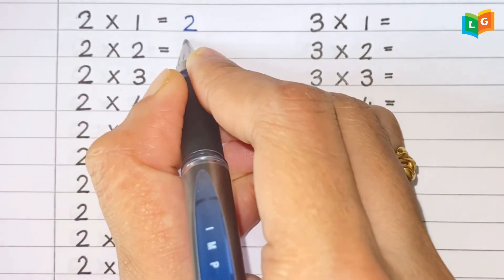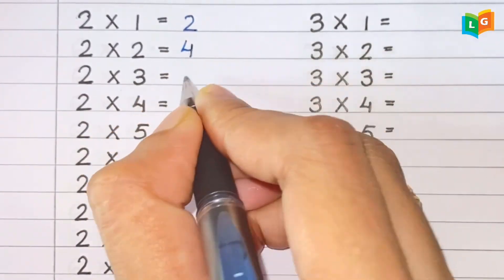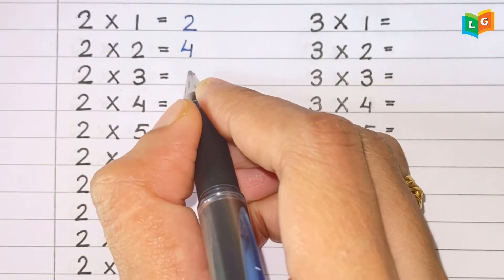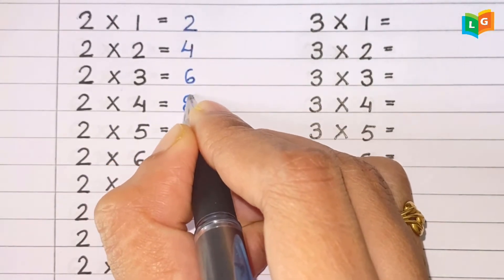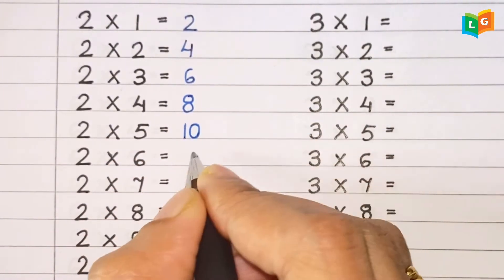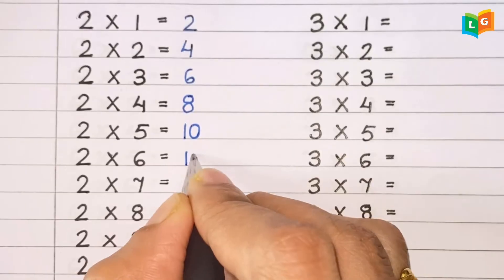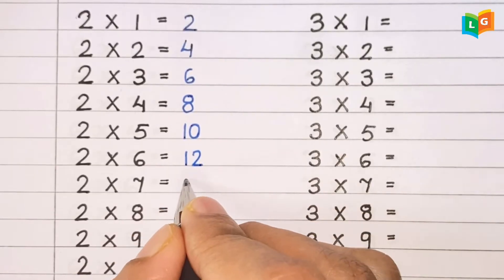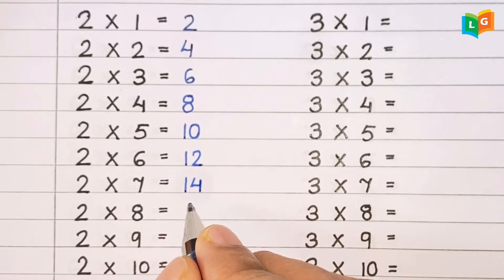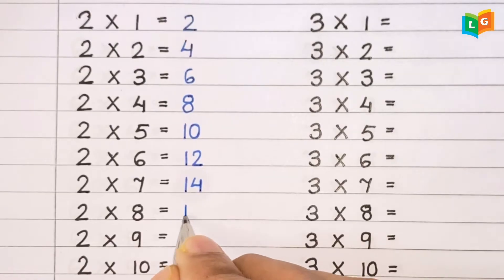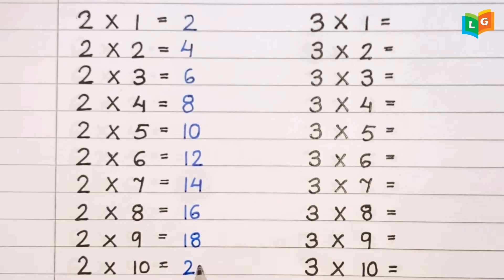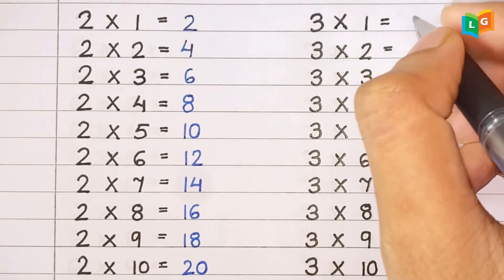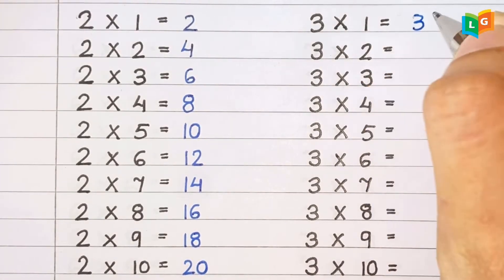2 1s are 2, 2 2s are 4, 2 3s are 6, 2 4s are 8, 2 5s are 10, 2 6s are 12, 2 7s are 14, 2 8s are 16, 2 9s are 18, 2 10s are 20.